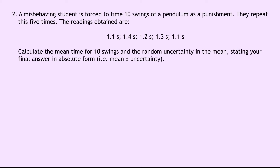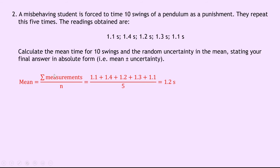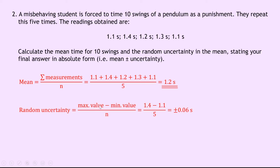Question 2: a student times 10 swings of a pendulum, repeating this 5 times. The readings are given in seconds. Calculate the mean time and the random uncertainty in the mean, stating the final answer in absolute form. The mean is the sum divided by 5, giving 1.2 seconds. The random uncertainty is the maximum minus the minimum divided by 5: 1.4 minus 1.1 over 5 equals plus or minus 0.06 seconds. Written in absolute form: 1.2 ± 0.06 s — note the uncertainty is to one significant figure.